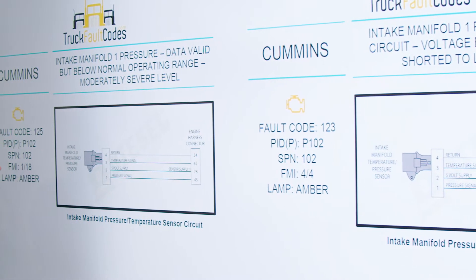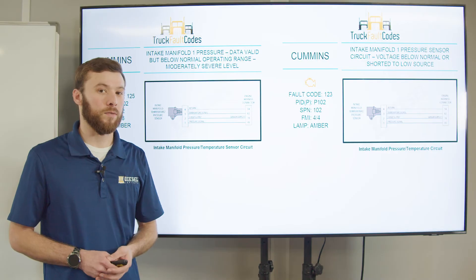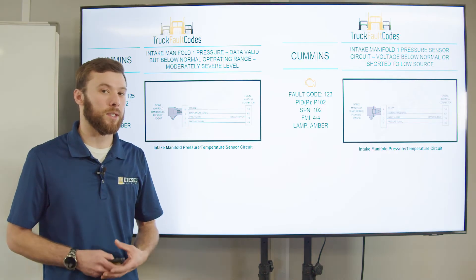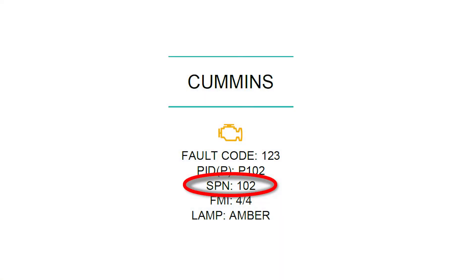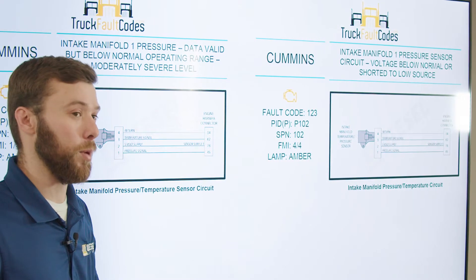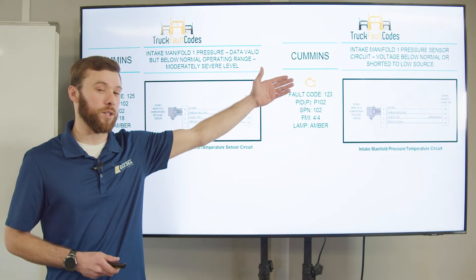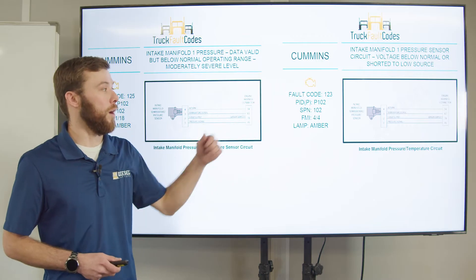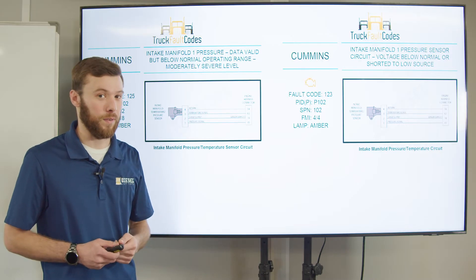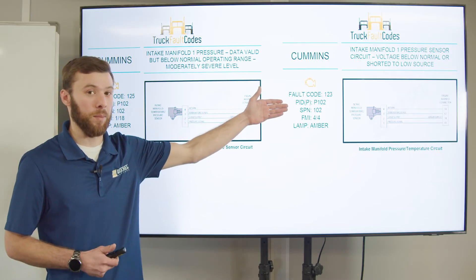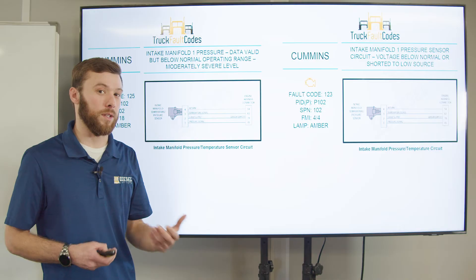We have FMI1 over here and FMI4 over here. FMI stands for failure mode identifier — this tells us how that circuit has failed. Our SPN is going to tell us what circuit has failed. SPN102 is suspect parameter number 102, which is indicating our intake manifold pressure sensor has a fault. So our FMI tells us how it failed. SPN — suspect parameter number — tells us what has failed. FMI — failure mode identifier — tells us how it has failed.